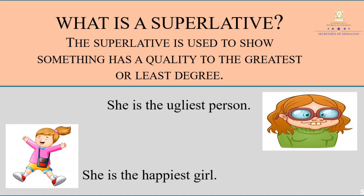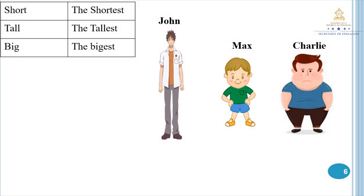Examples: She is the ugliest person. She is the happiest girl. Vamos a ver los siguientes ejemplos.